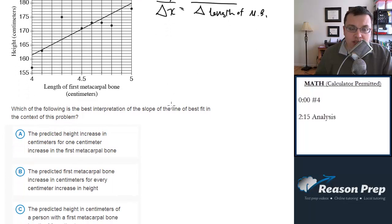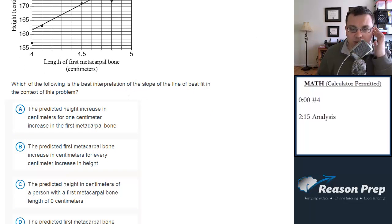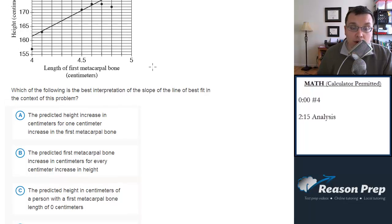So let's go to the choices and see what we have. Which of the following is the best interpretation of the slope? A, the predicted height increase in centimeters for one centimeter increase in the first metacarpal bone.